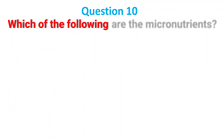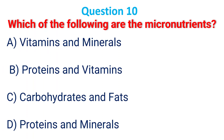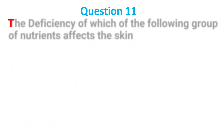Which of the following are micronutrients? A. Vitamins and minerals; B. Protein and vitamins; C. Carbohydrate and fat; D. Protein and minerals. The answer is A, vitamins and minerals.